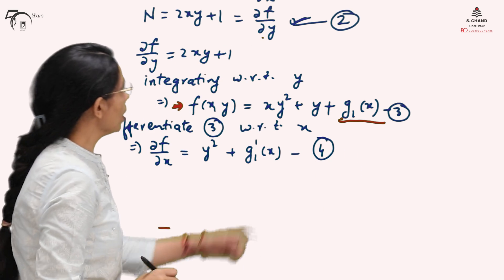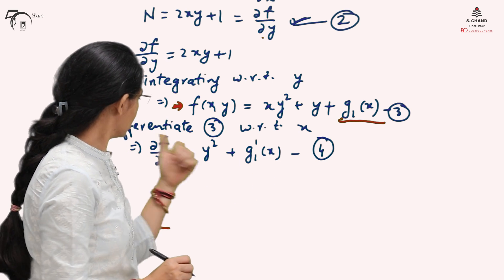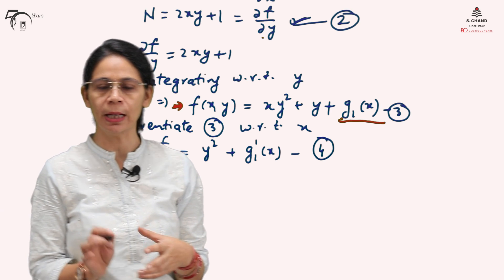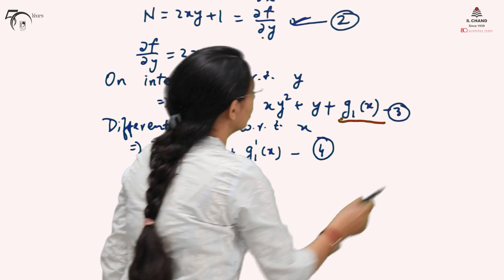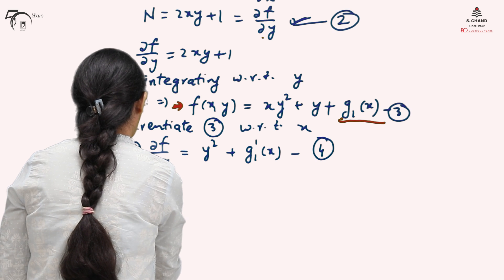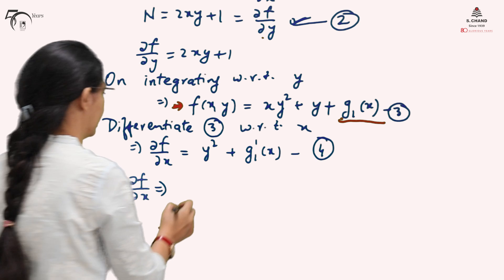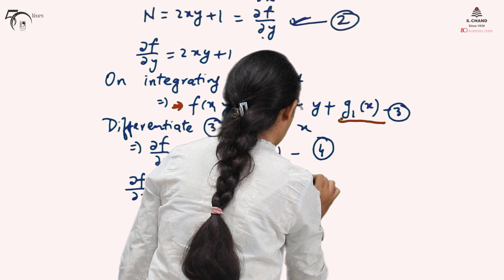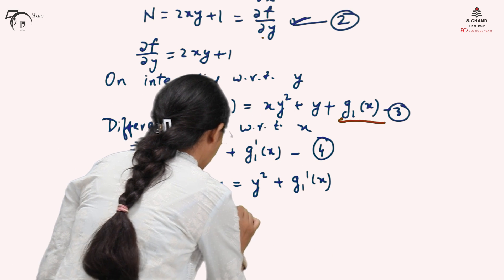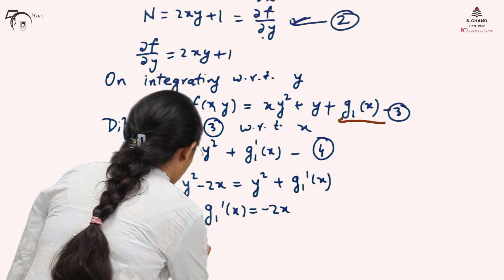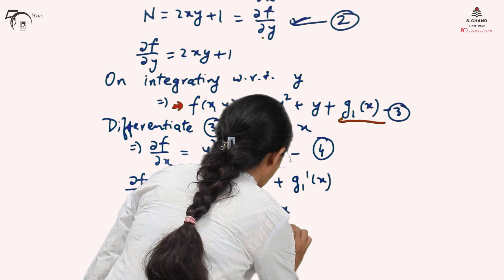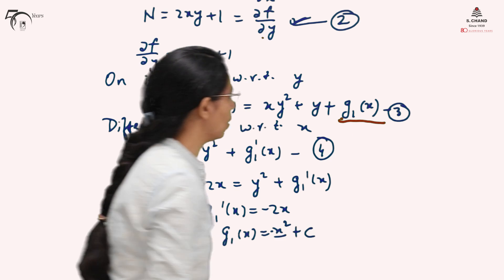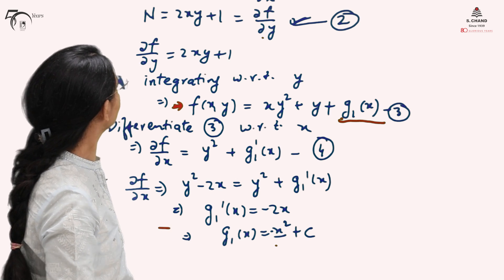Equating equations (1) and (4): since f(x,y) is the same function, ∂f/∂x must be the same from both. Comparing: from M we have ∂f/∂x = y² − 2x, and from equation (4) we have y² + g₁'(x). Therefore g₁'(x) = −2x, and integrating with respect to x gives g₁(x) = −x². This is why we could not take a plain constant — we would have missed the −x² term.